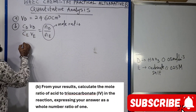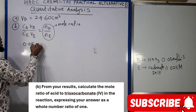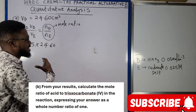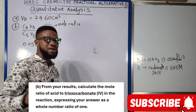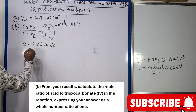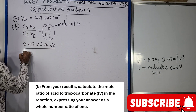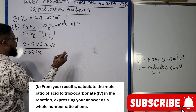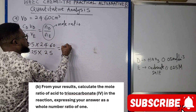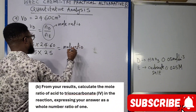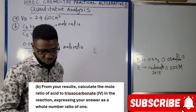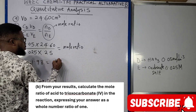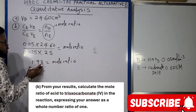So cD is 0.05, VD is the average titre value 24.60 cm³ — note that you should use the titre value from your own examination centre. cE is 0.025 and VE is the pipette volume of 25 cm³. Computing this gives us a mole ratio of 1.98.